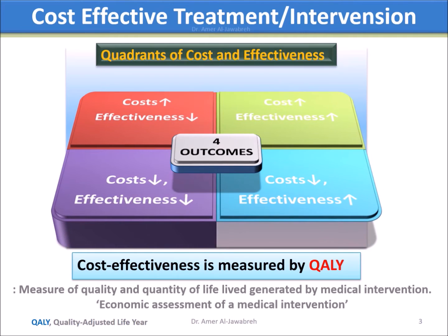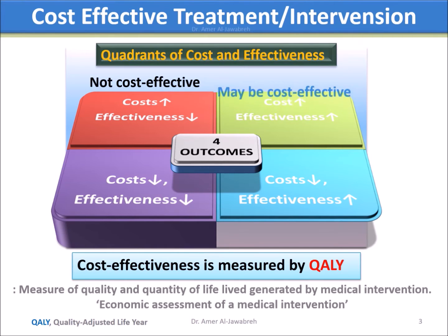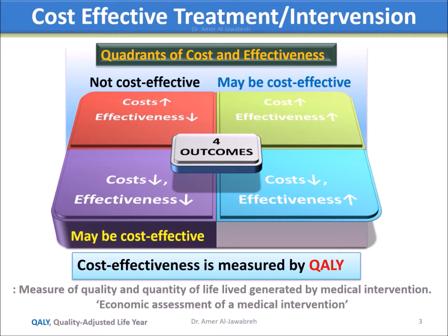The four probabilities of cost and effectiveness: If cost is high and effectiveness is low, then it is not cost effective. If both are high or both are low, then it may be cost effective. Finally, if cost is low and effectiveness is high, then it is cost effective.